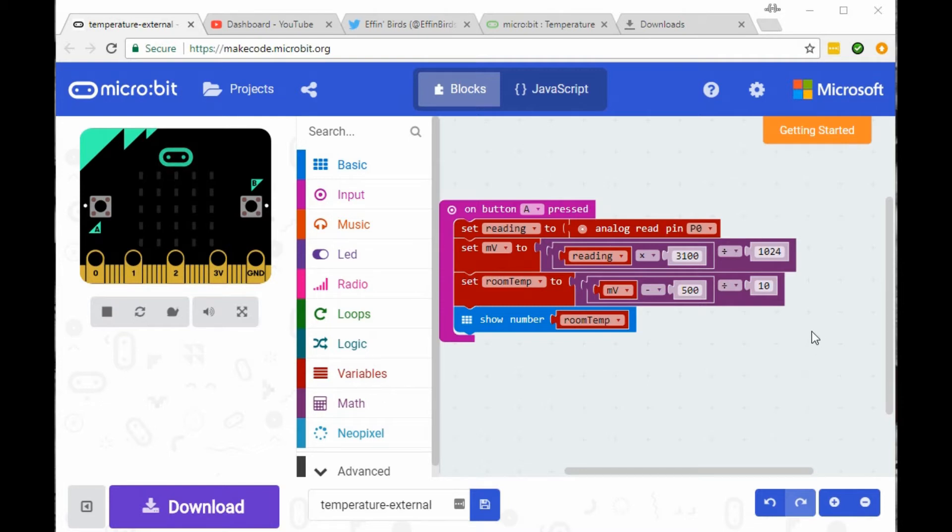Looking at the software that I put in that right hand micro:bit. Again, we've got the on button A pressed, so when I press the A button it drops into this piece of code. First of all, I'm reading a value from the analog pin, from pin zero, and then there's a couple of lines here where I do some transformations on it.